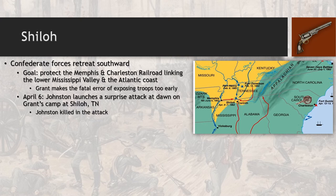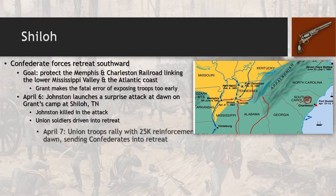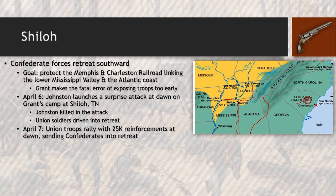Johnston is actually killed in the attack, unfortunately for him. The Union soldiers are suddenly driven into retreat. The following day on April 7th, Union troops rally with 25,000 reinforcements arriving at dawn, and now the Confederacy is sent into retreat. This illustrates a recurring pattern — the Union and Confederacy constantly going back and forth into retreat, producing a kind of yo-yo effect throughout the war.